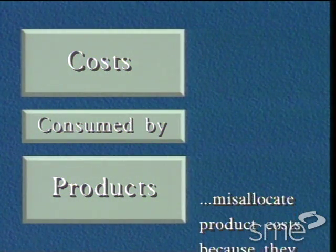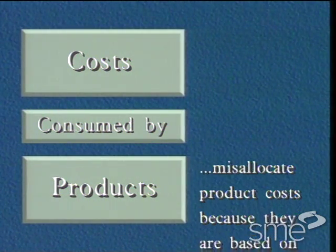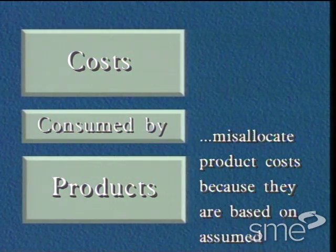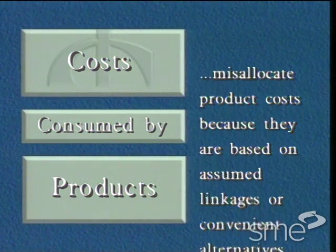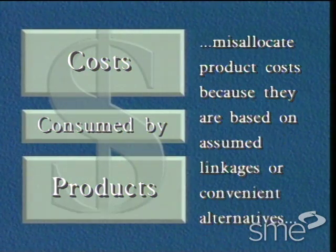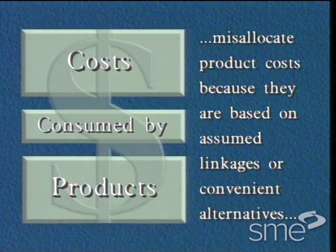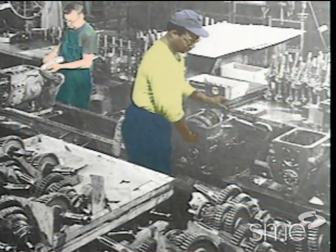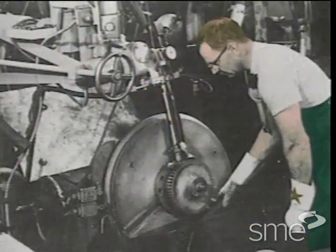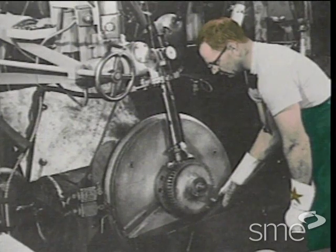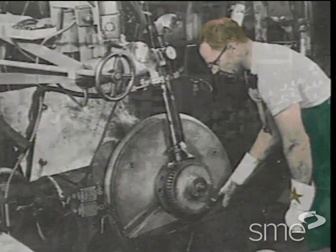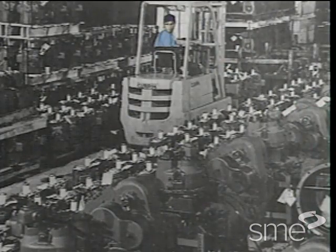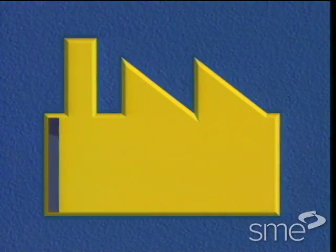Traditional accounting systems misallocate product costs because they are based on assumed linkages or convenient alternatives such as raw materials and direct labor hours. This worked well in the past when these two factors accounted for as much as 70% of a product's cost. However,